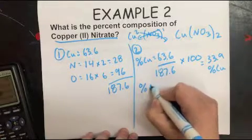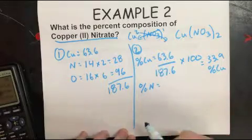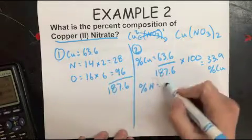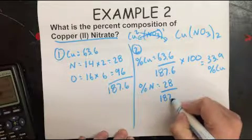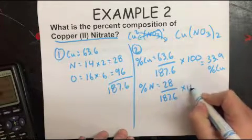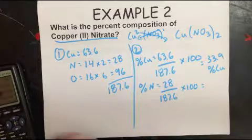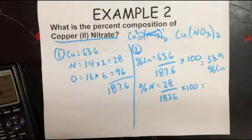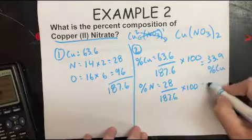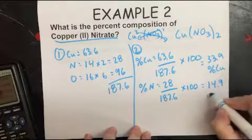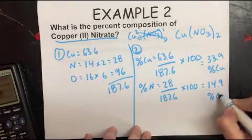And then you're going to keep on going. So percent of nitrogen, you do the mass of nitrogen, so that total amount which is 28, divided by 187.6 times 100, which gives you 14.9% nitrogen.